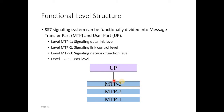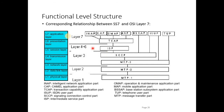The message transfer part has three sub-parts which are called MTP1, MTP2, and MTP3. MTP1 is responsible for the signaling data link level, MTP2 handles the signaling control, and MTP3 handles the signaling network function, while the user part uses the services of MTP1, 2, and 3 to travel messages through the signaling network.